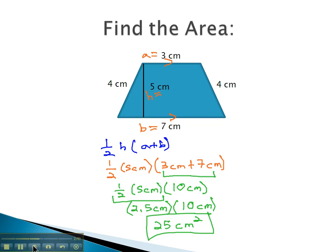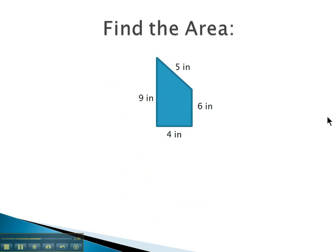Let's try another example where we find the area of a trapezoid. This trapezoid is less traditional, but the process is still the same. We know that the area of a trapezoid is one-half times the height times the sum of the two bases.